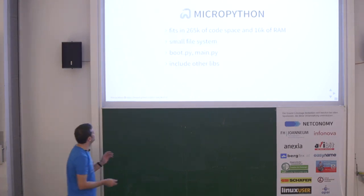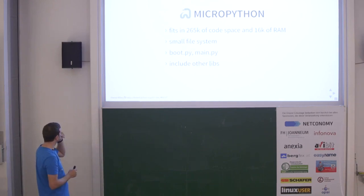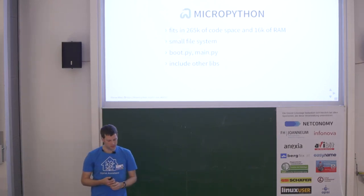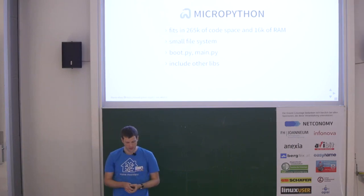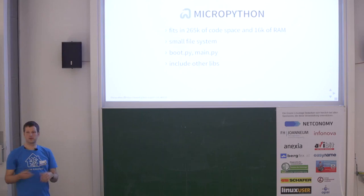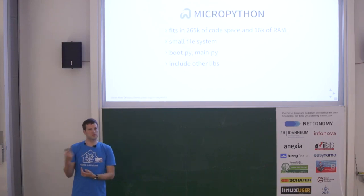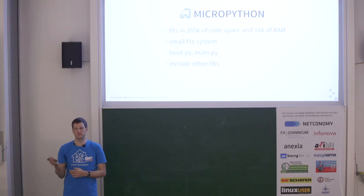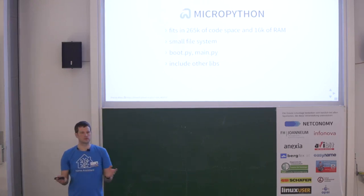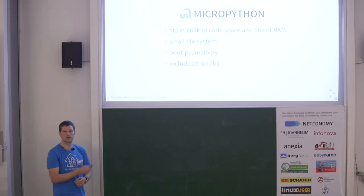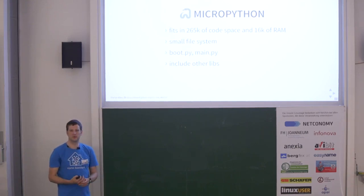But the price is not where we want it for decent home automation. MicroPython fits in 265k of code space, so you can run it on tinier devices than that ARM chip, and you get by with about 16k of RAM. MicroPython comes with a small file system, so you have your Python scripts right in there. You can put them on the device with a serial console or via other methods when flashing. When the device boots, it first runs boot.py, then main.py — where your general source code lives. You can also include other libraries that others provide.